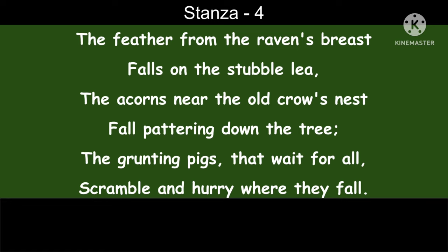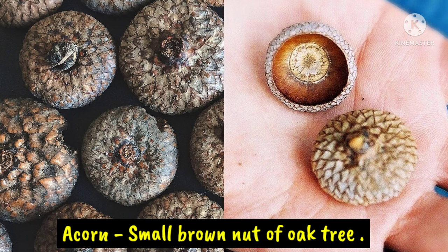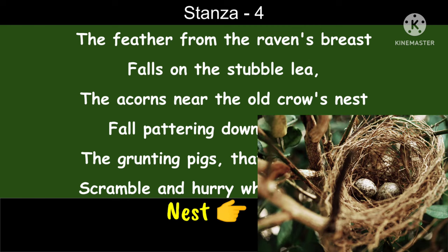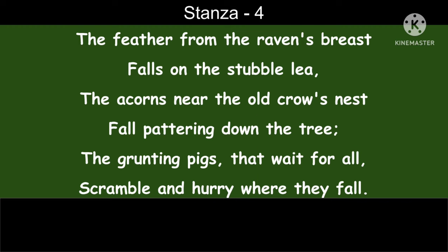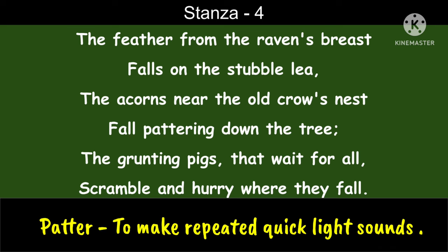The acorns near the old crow's nest fall pattering down the tree. Acorn is the small brown nut of the oak tree. These acorns are falling from near the old crow's nest. And when these acorns fall, they produce pattering sounds — quick repeated pat-pat-pat sounds as they hit the ground.